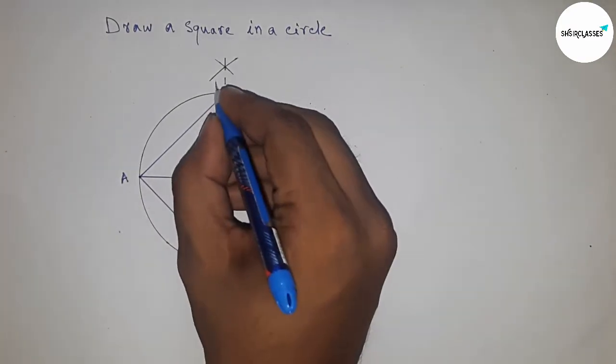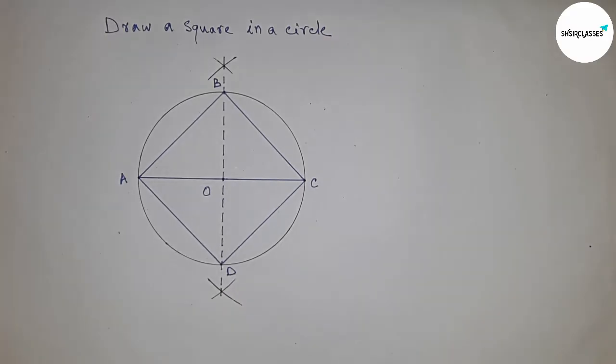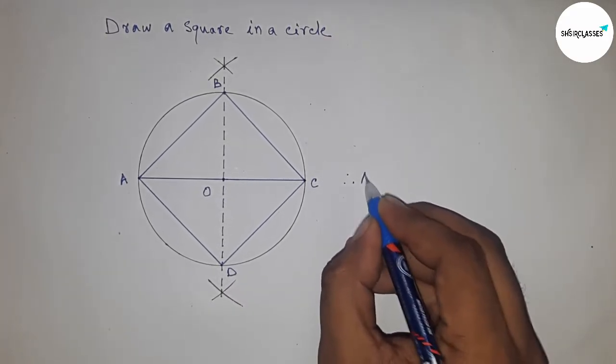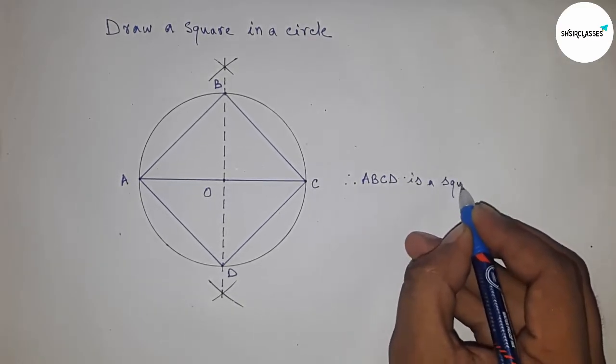Therefore, ABCD is a square in the circle because all angles of ABCD are 90 degrees.